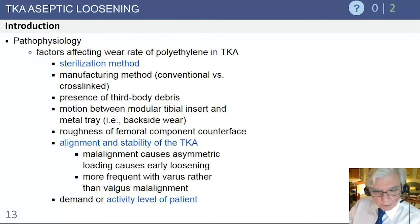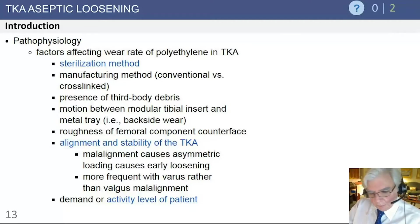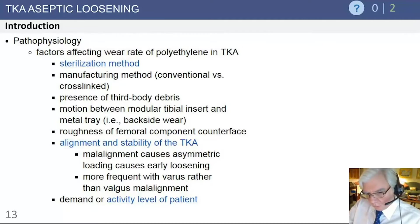The pathophysiology of osteolysis has a lot to do with wear of polyethylene. Many factors influence polyethylene wear. Most dramatically was the sterilization method — this was a significant problem with the PFC knee about 25 years ago, where that sterilization technique produced massive osteolysis and significant damage to the polyethylene. Manufacturing technique — conventional versus cross-linked polyethylene — is also important, though conventional compression-molded polyethylene remains an outstanding bearing surface. Third-body debris will also increase wear.